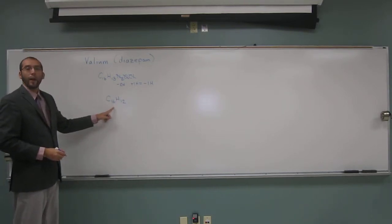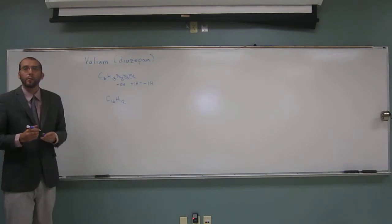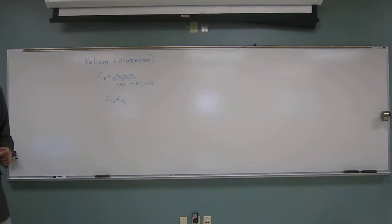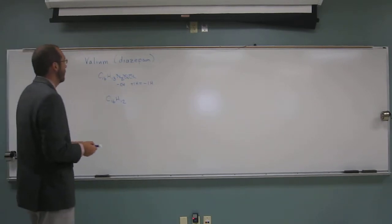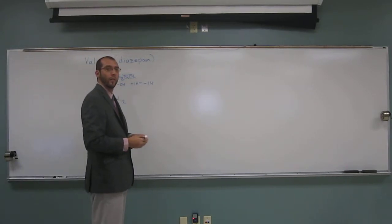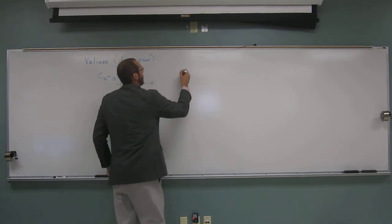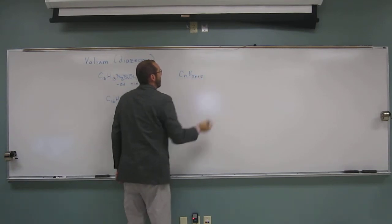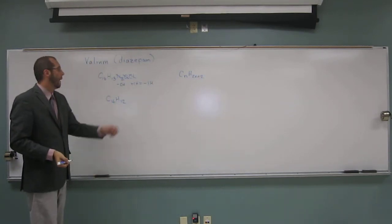So how do we go from here to determine the number of units of unsaturation? We use a formula, the alkane formula. So what is that formula? CnH2n plus 2. So let's write down again, CnH2n plus 2. You got that one, right?